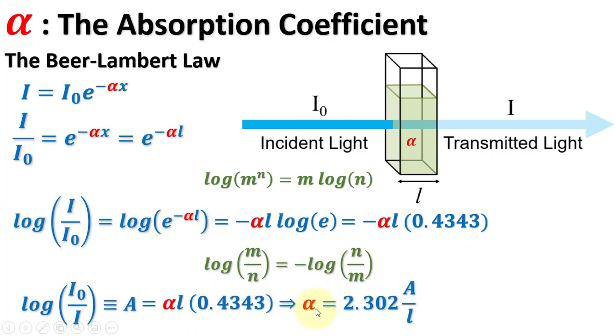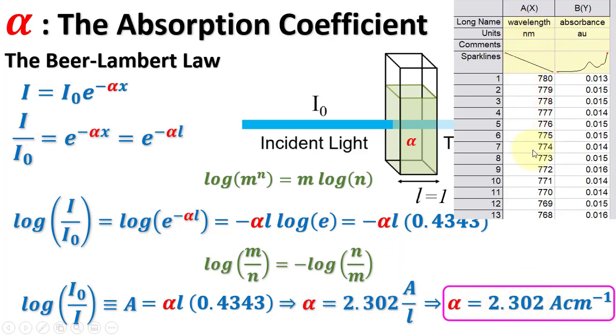Rearranging the terms and putting L equal to 1 centimeter, the internal dimensions of a standard cuvette. Thus, from the UV-Vis absorption data, we will directly put the value of absorbance and alpha will be in the units of cm inverse.